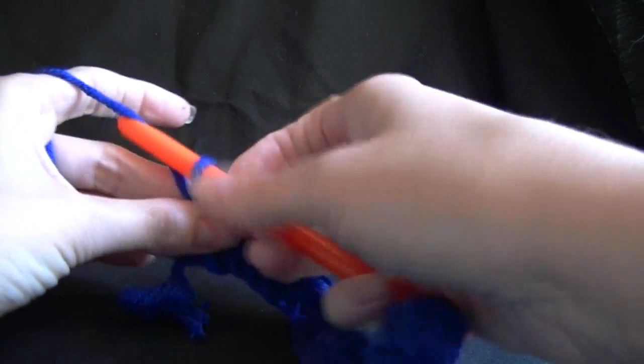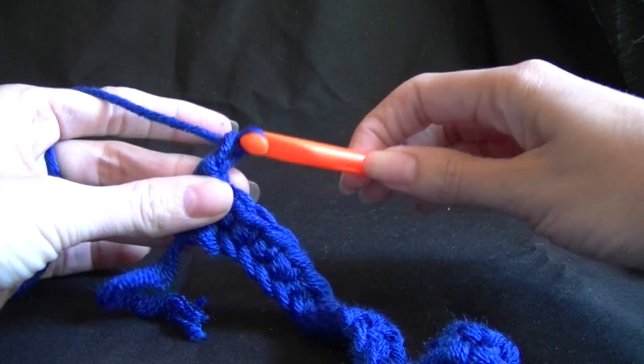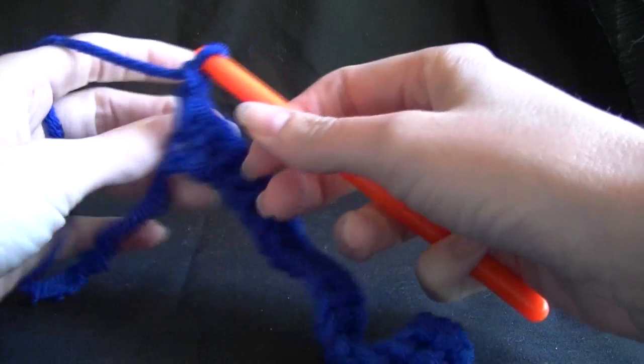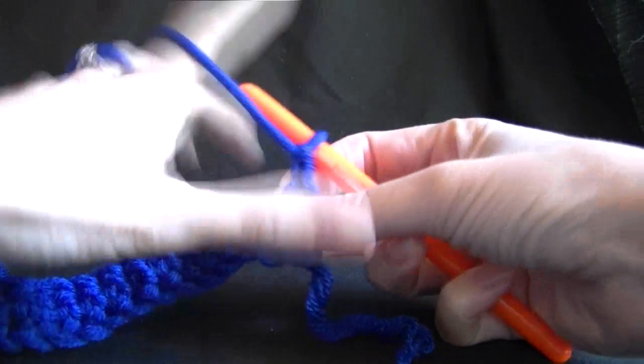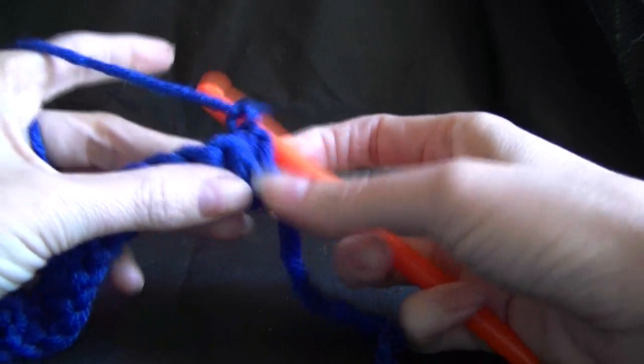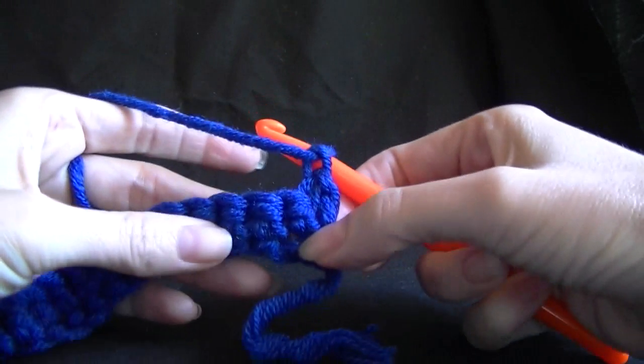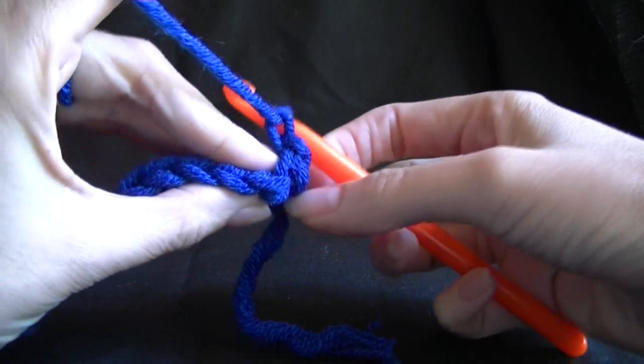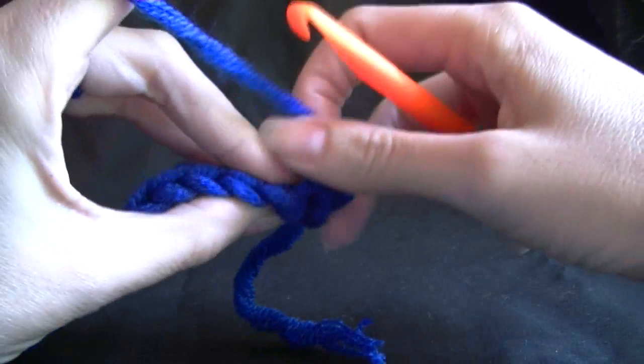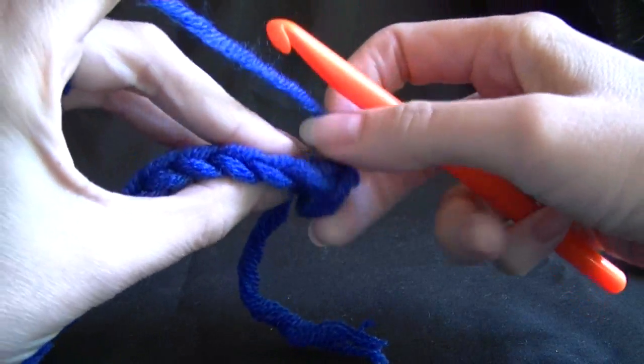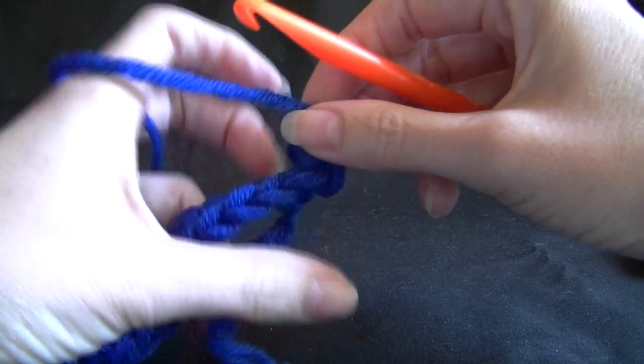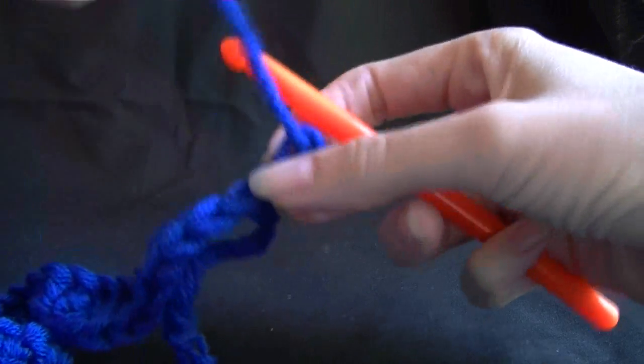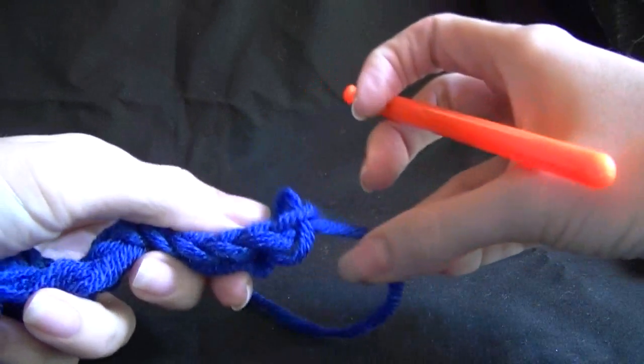We now want to chain up 1, turn your work around, and this time we're going to be working into the back loops only. So looking, this is what you look at normally, looking at the top of our crochet work here, see how there's the V's on the top there?